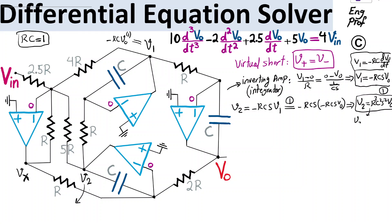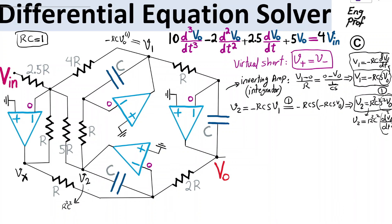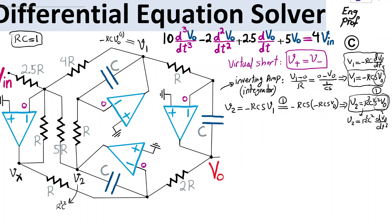To write this in time domain equivalence: V2 corresponds to R²C²S²·Vout in S domain, which translates to the second derivative of Vout with respect to time. Similarly, S·Vout translates to the first derivative. So at the first node we have the first derivative, and at the second node we have the second derivative of Vout.